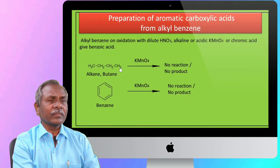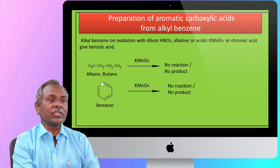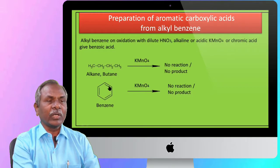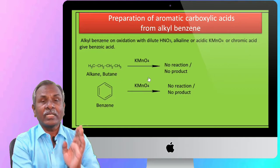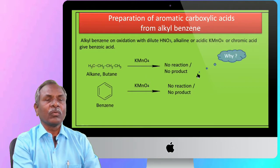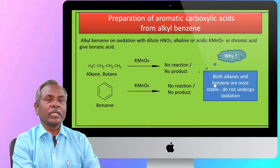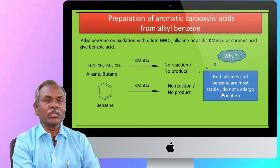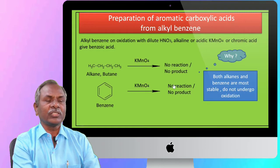Alkane and benzene are saturated hydrocarbons with carbon-carbon single bonds and carbon-hydrogen single bonds. Benzene has a conjugated system of alternating double and single bonds. The reason alkane and benzene do not react is that both are most stable towards oxidation, and therefore they do not undergo the oxidation process.